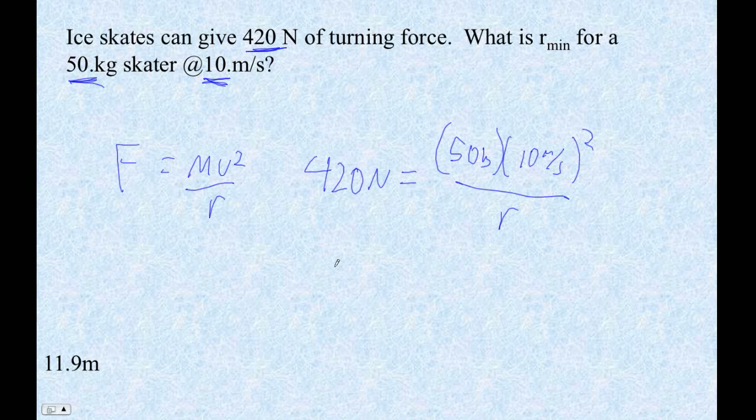And then, of course, our next step is that it'll be 420 newtons equals—that's going to be 100. 10 squared is 100, 50 times 100 is 5,000. So 5,000 kilogram meters squared per second squared divided by r.